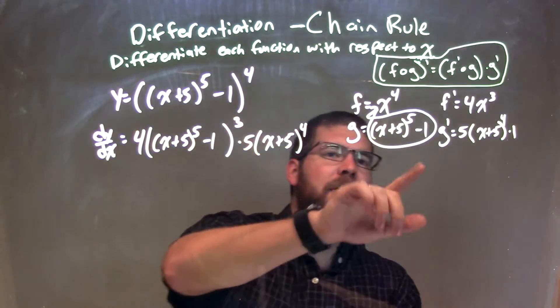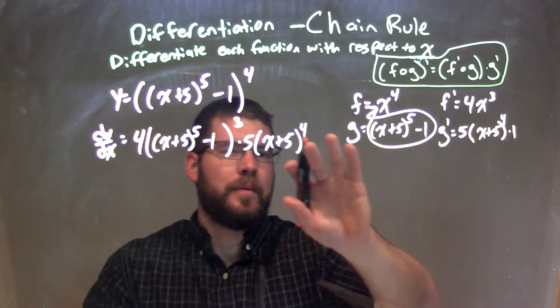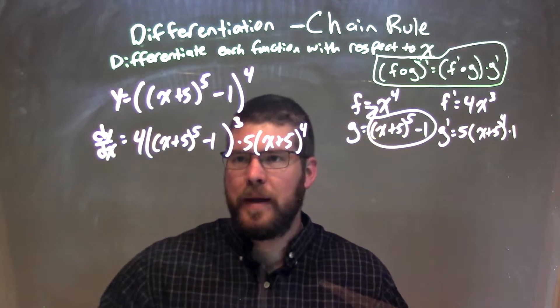And luckily, there wasn't much afterwards. The derivative of the inside was pretty easy. It was just 1. But if there was, we'd have more things multiplied. But I'm not going to put that multiplied times 1 there.